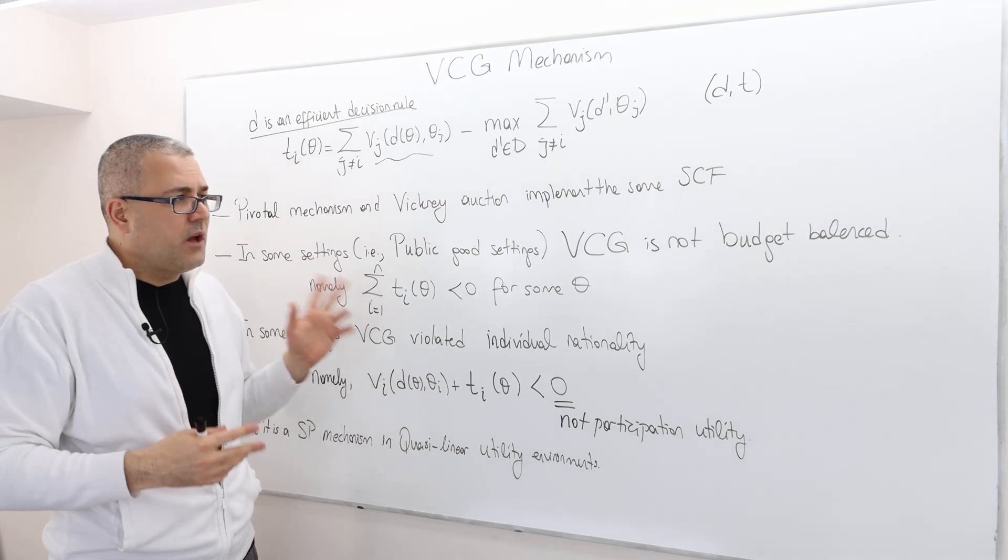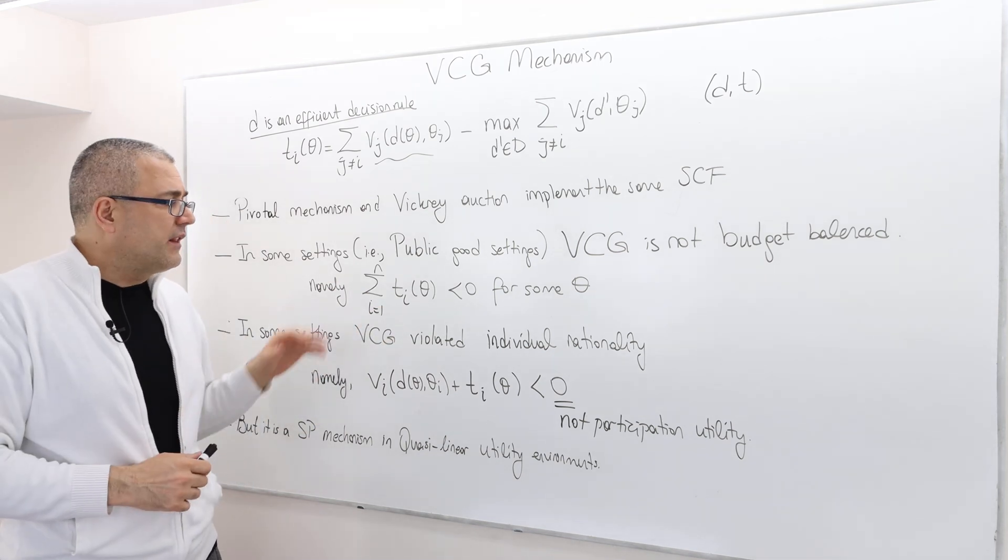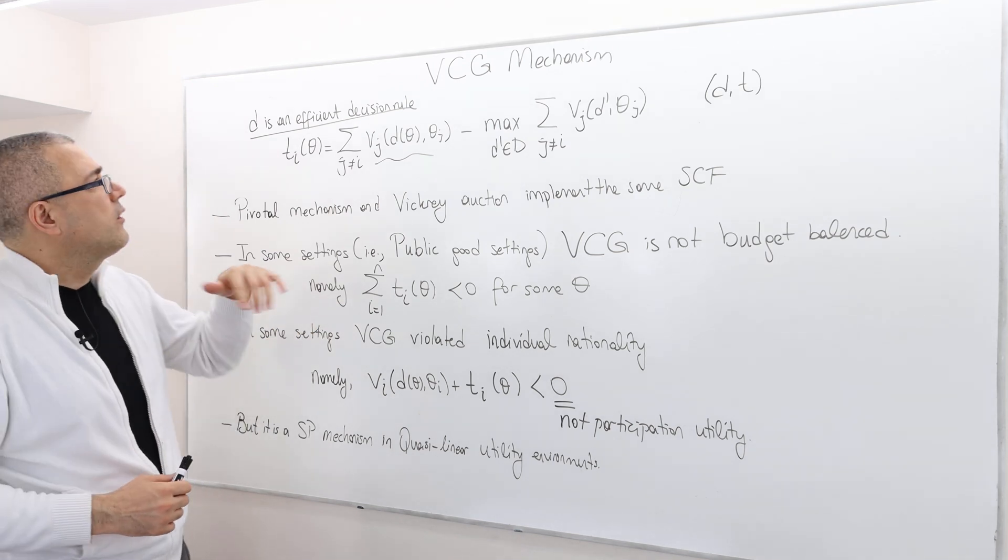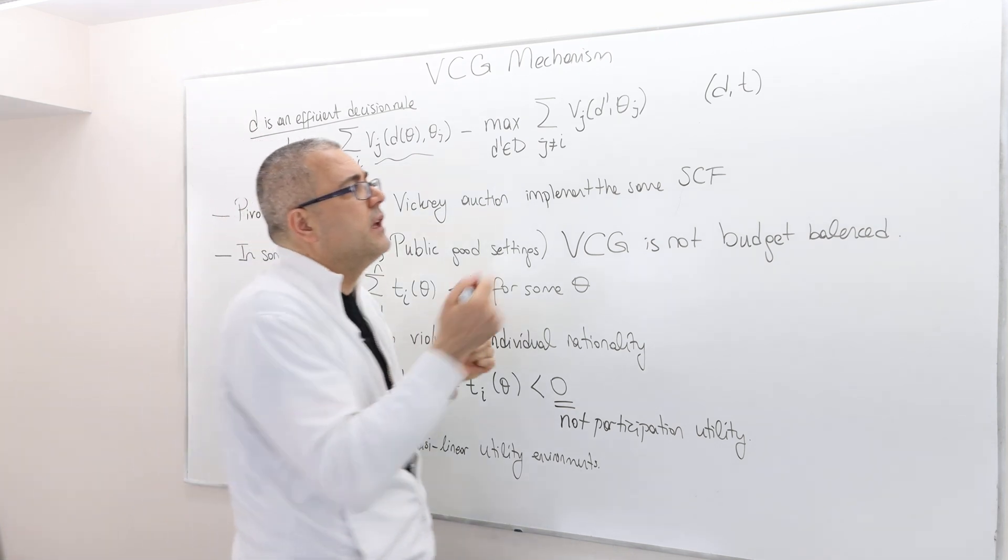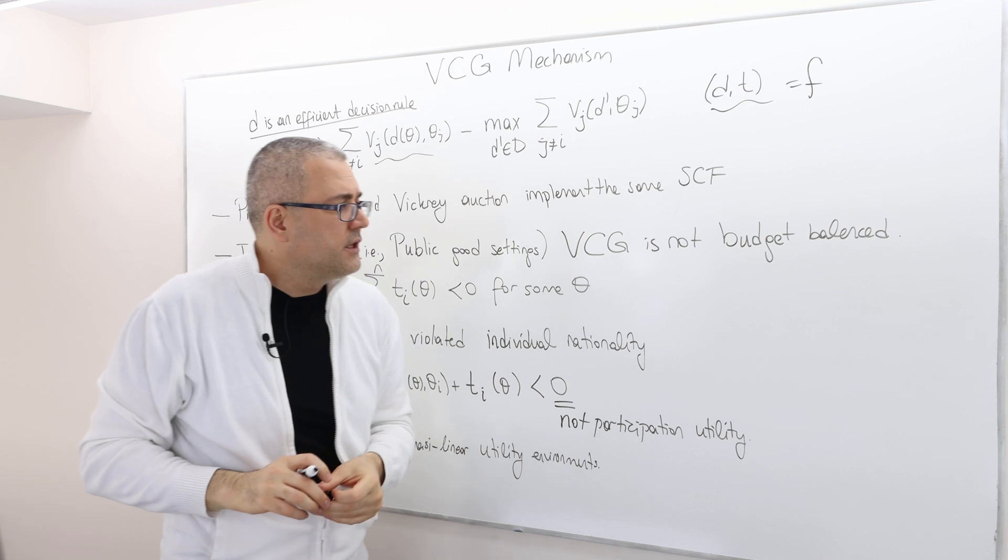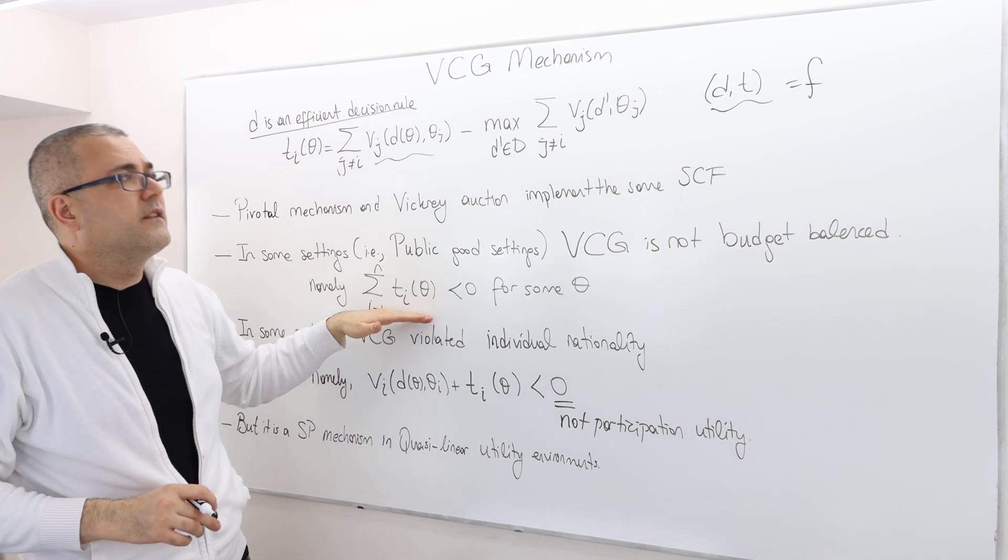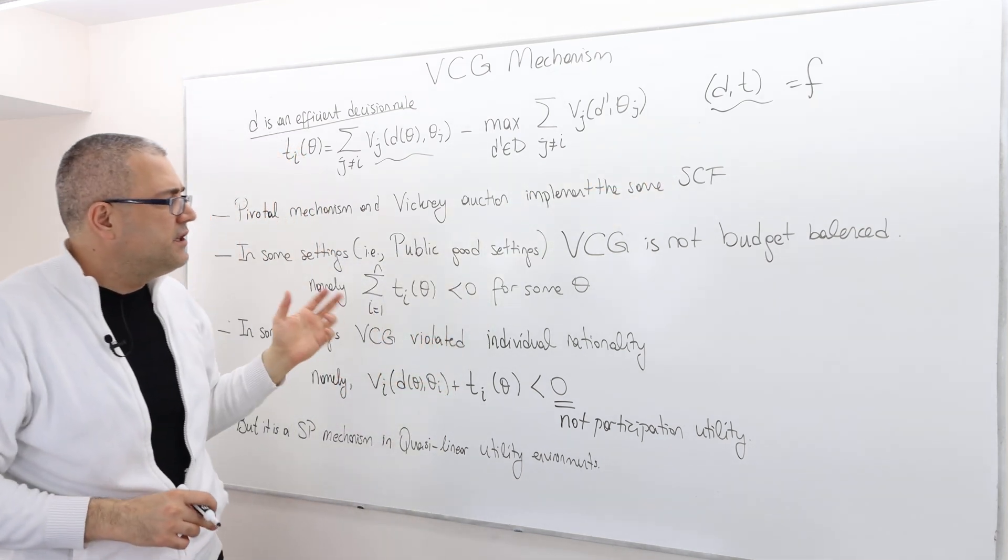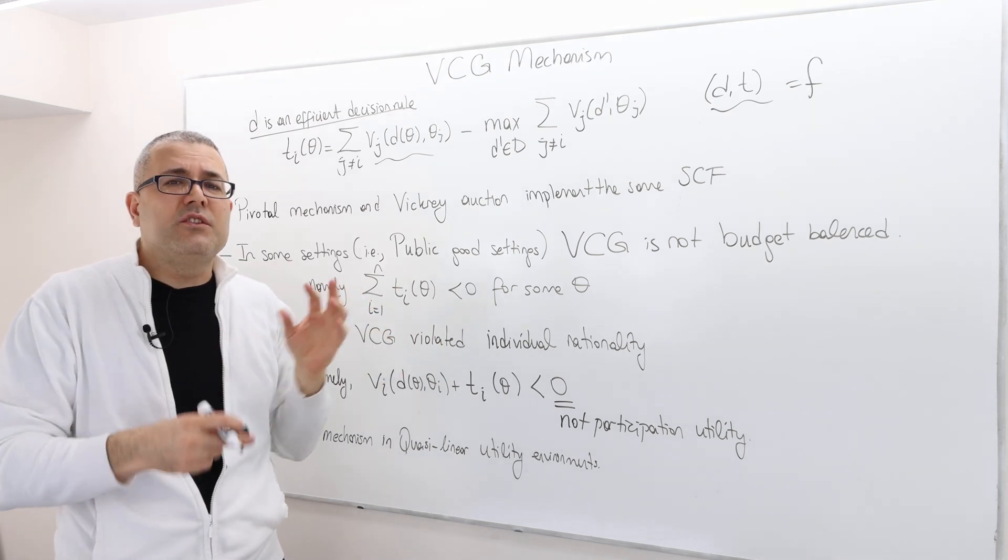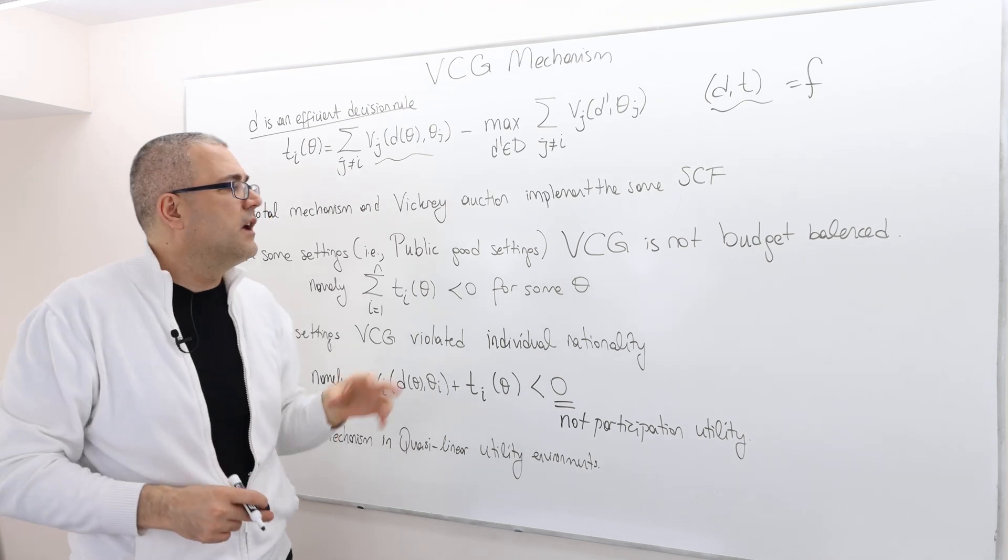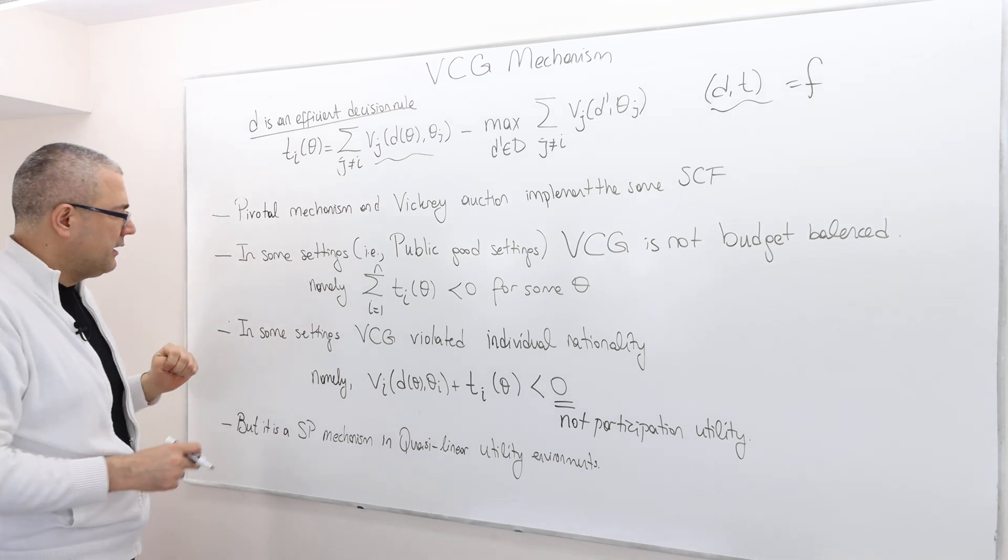However in those environments it could be the case that the budget balancedness is not satisfied. Well that's a problem because remember we talked about efficiency of the decision rule but we didn't really talk about the efficiency of the social choice function. So yes the VCG mechanism is efficient in terms of its decision rule but as a social choice function the VCG mechanism actually may not be efficient when we consider the transfer as well as a part of efficiency. VCG actually may fail to satisfy efficiency because of the budget balancedness.